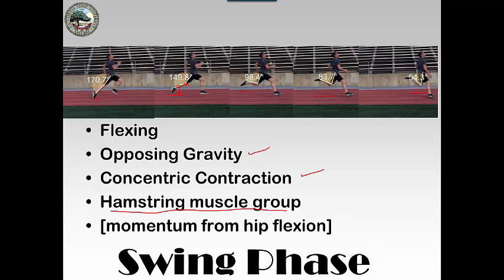Those muscles are the hamstring muscle group: biceps femoris, semimembranosus, semitendinosus. If you're running fast, as this gentleman is doing, a lot of times this knee flexion comes from momentum from hip flexion. So sometimes when you compare EMG tracings, there will be no active contraction of the hamstring muscles, because this flexion is coming from the hip being flexed during the same phase.